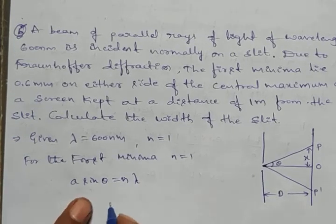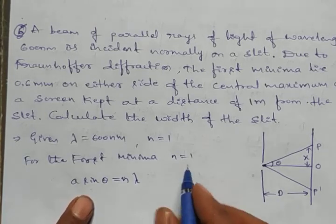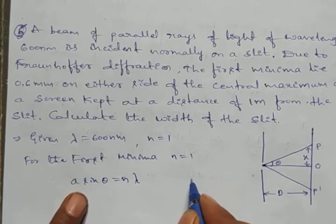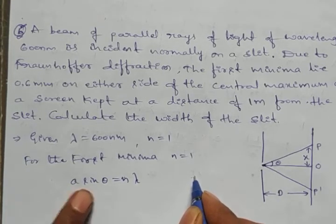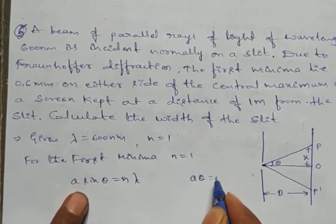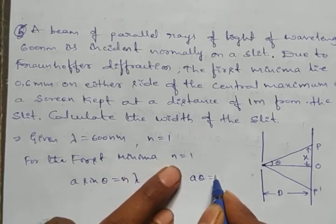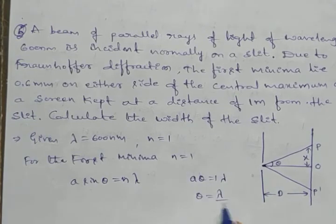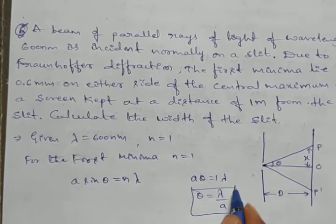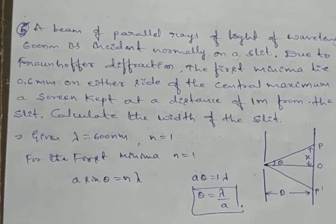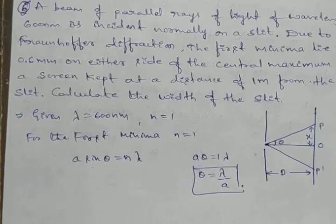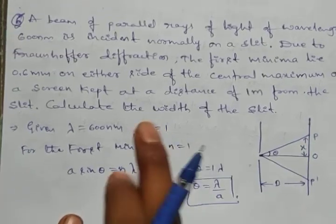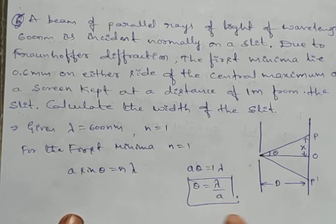Since theta is very small, we can write sine theta is nearly equal to theta. Therefore, a into theta equals n into lambda, which gives theta equals lambda divided by a. This is equation one.